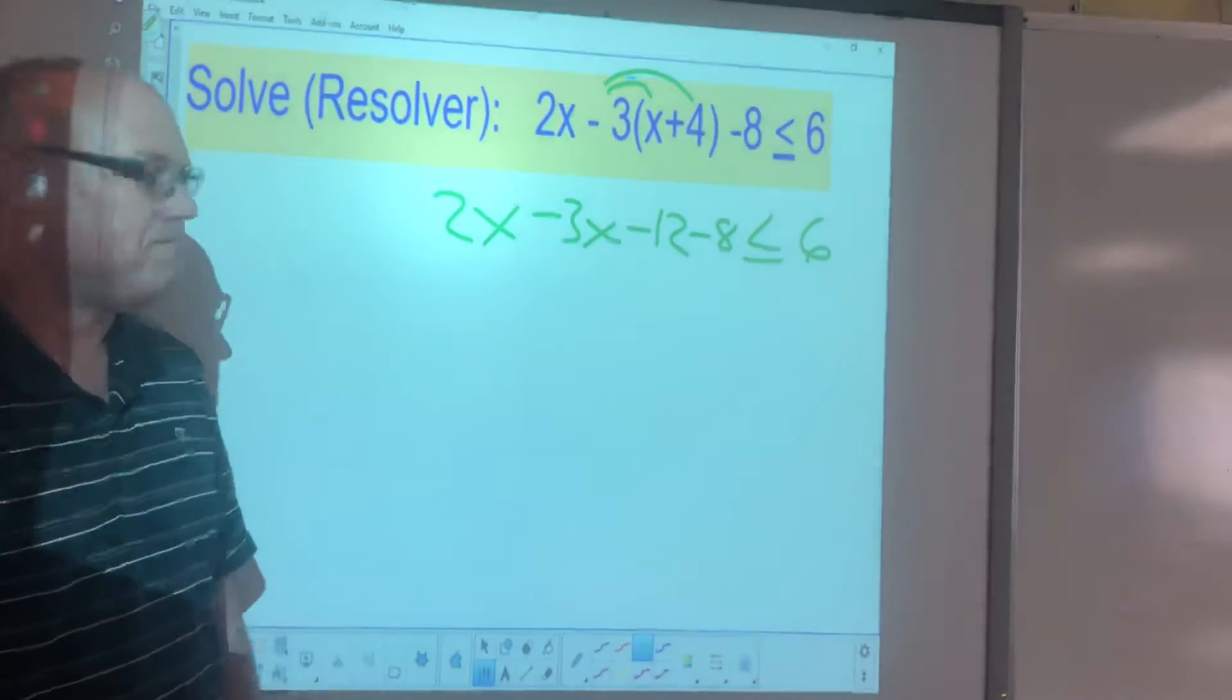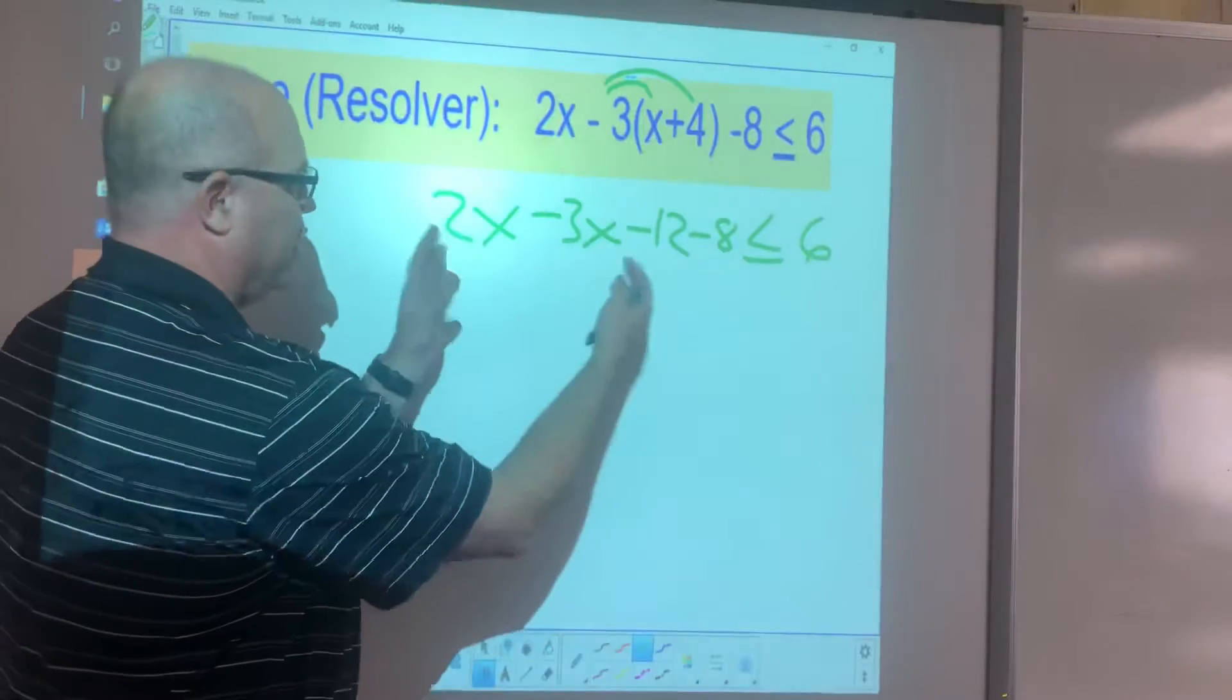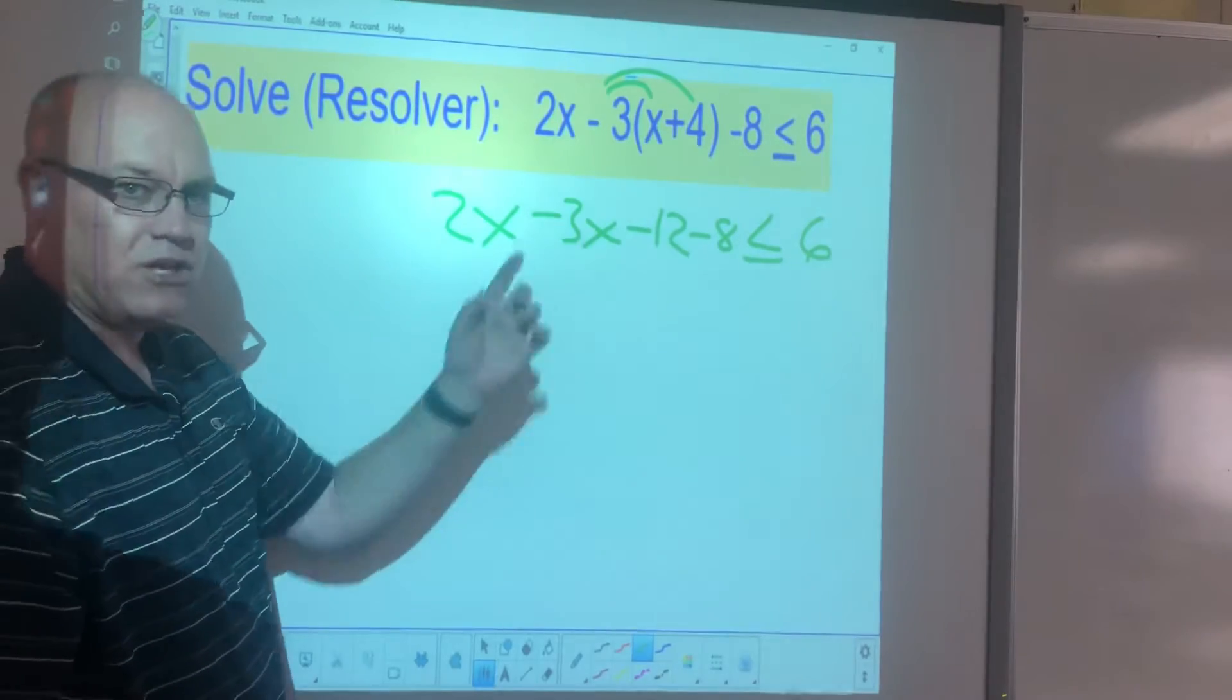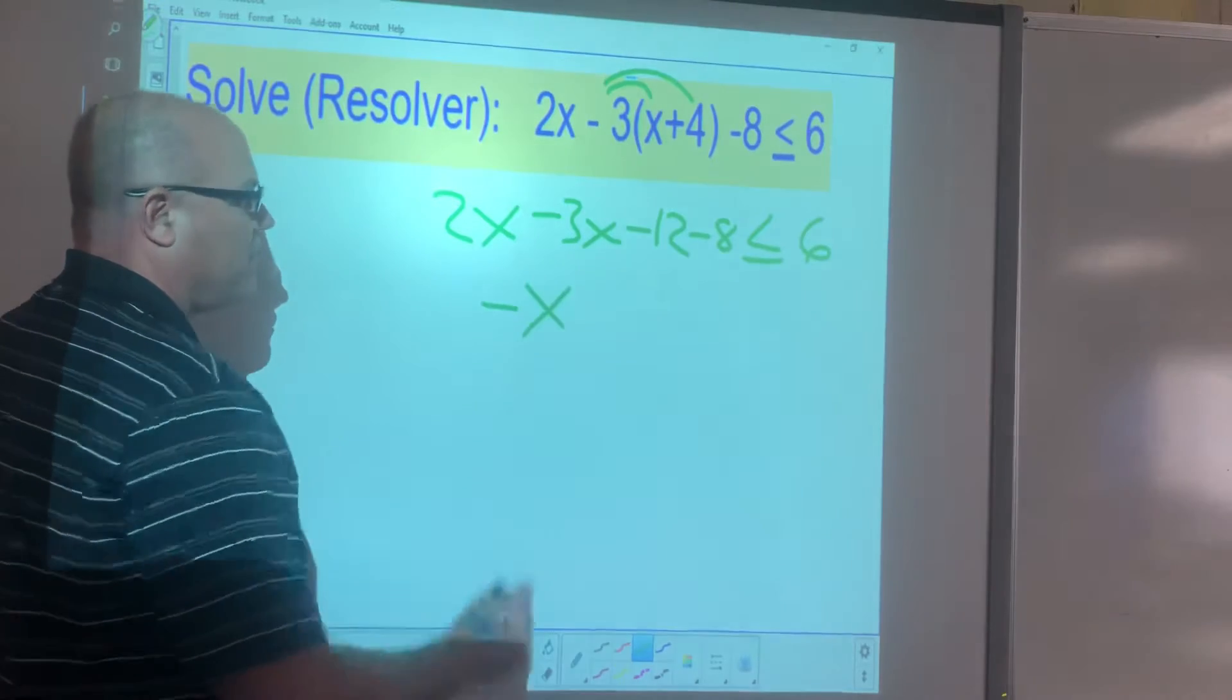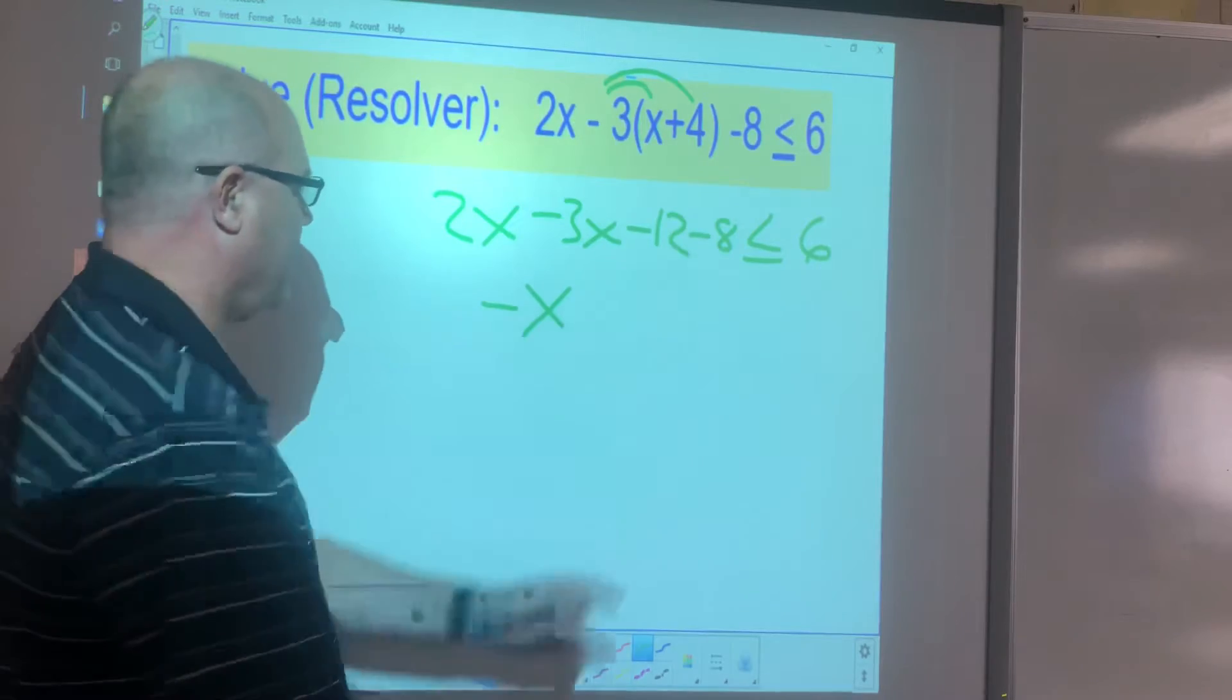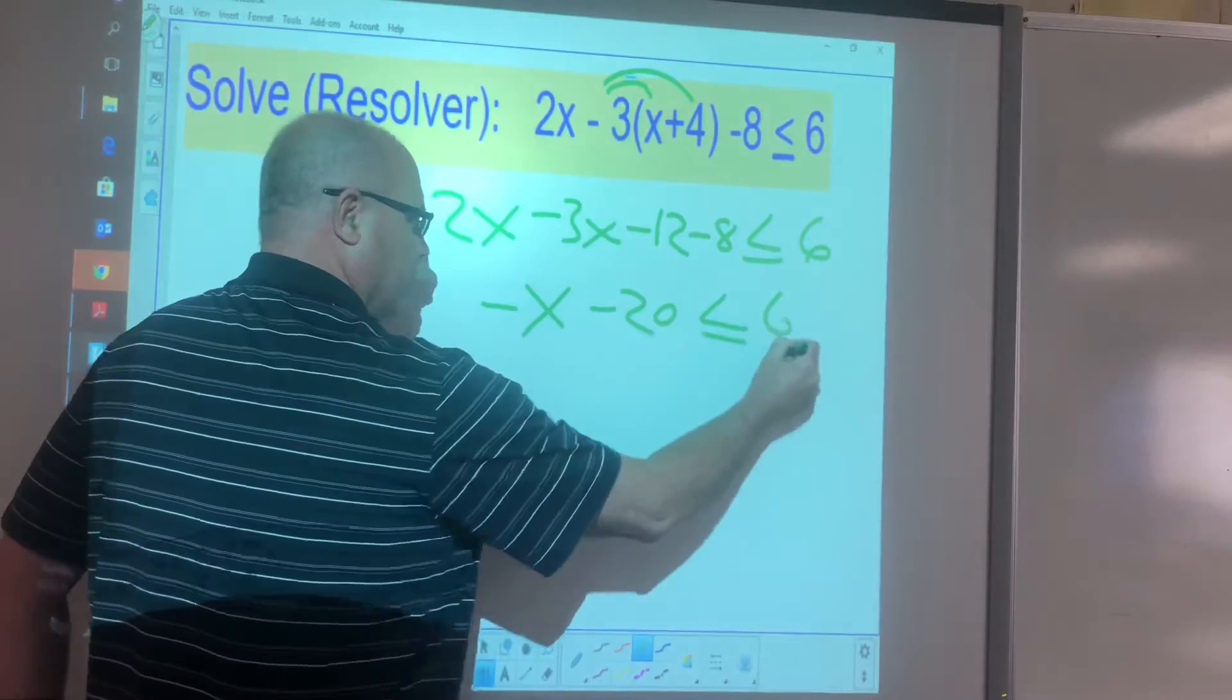What's our next step? Our next thing we want to do is we want to combine like terms on this left side of the inequality. So 2x and negative 3x, you combine those, you add those up, you're going to get negative 1x, so negative x. I have negative 12 plus negative 8. Negative 12 to negative 8 is negative 20, is less than or equal to 6.